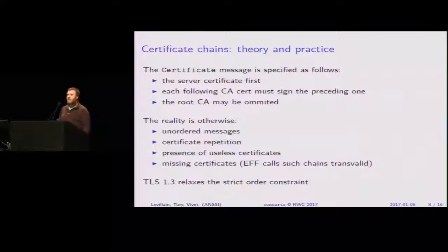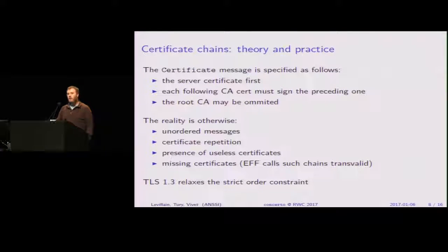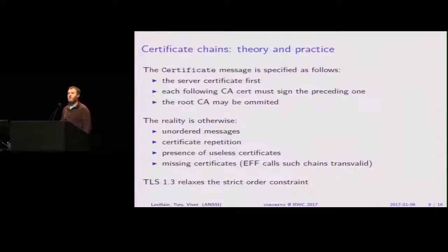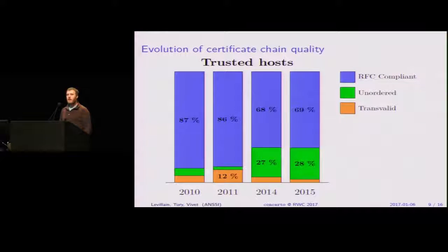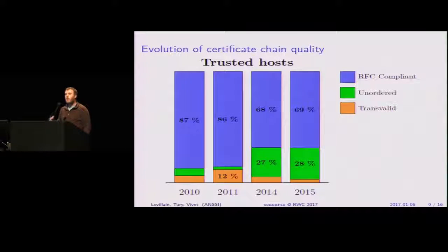Now I'm going to speak mostly about certificates. When the server answers, it presents a certificate message containing the list of certificates, which should be ordered — first the server certificate, then each certificate authority signing the previous one. In reality, you find unordered messages, repeated certificates, unused certificates, and sometimes missing certificates — what the EFF called transvalid chains in their 2010 or 2011 publication. Interestingly, TLS 1.3 relaxes the ordering constraint, which is a good thing because fewer and fewer certificate messages are RFC compliant, as they are not necessarily ordered for various reasons.